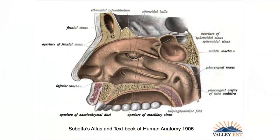The nasal septum — this is called the quadrangular cartilage. The front part is made of cartilage; the top, back, and bottom are made of bone. The perpendicular plate of the ethmoid is attached to the cribriform plate. The vomer is attached to the sphenoid and the palatine bone.